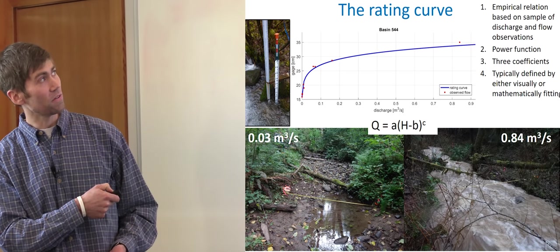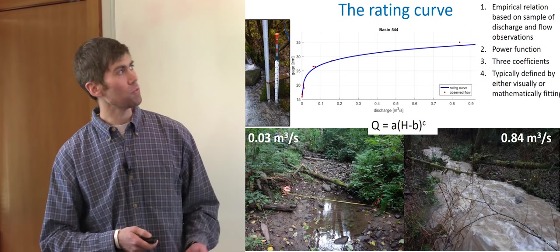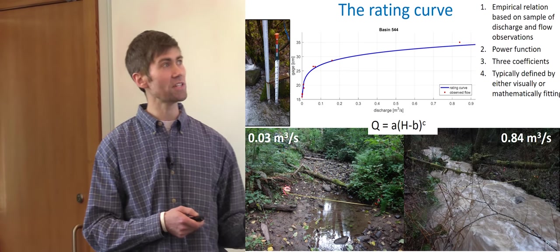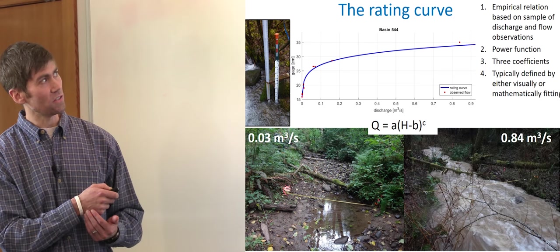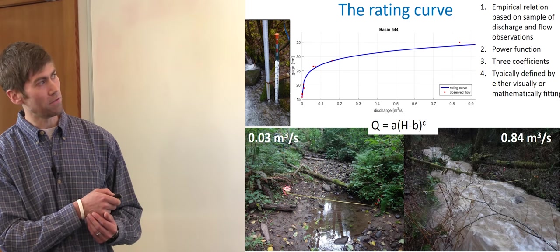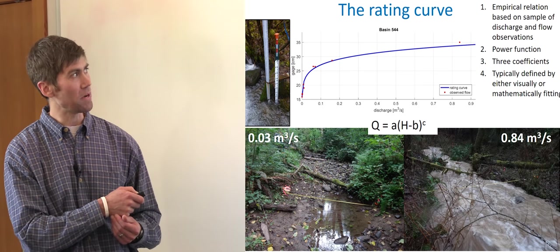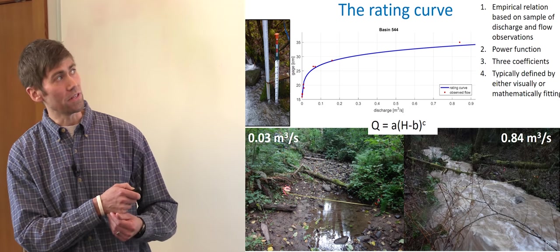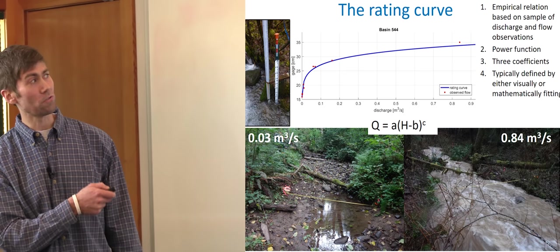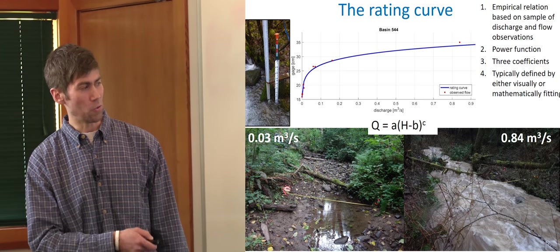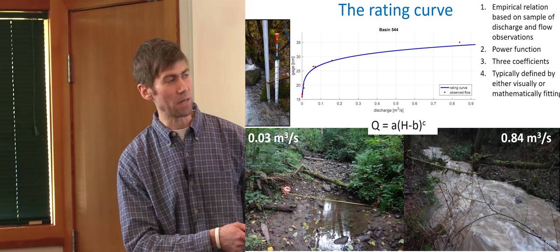So here is a rating curve for basin 554. And typically when you establish a rating curve, it's either visually fit or maybe using some sort of mathematical method. You fit a power function to your observed flow and flow depth. It has three coefficients. You just vary the coefficients until you minimize the difference between the rating and your observations. You'll notice that with our observations, most of them are down here in the lower flows, which is more like this or maybe a little higher. It's really hard to be out there for these types of flows.